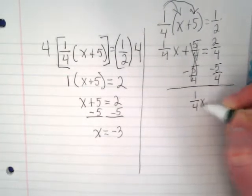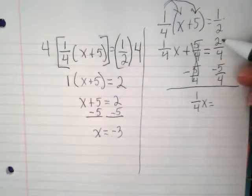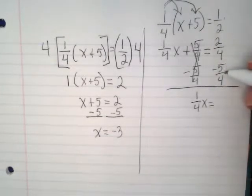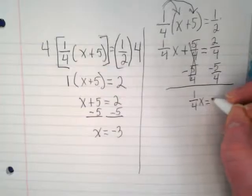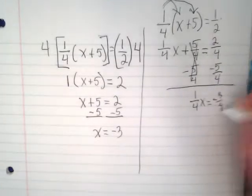So I have 1 fourth x is equal to 2 fourths minus 5 fourths, which is going to give me negative 3 fourths.